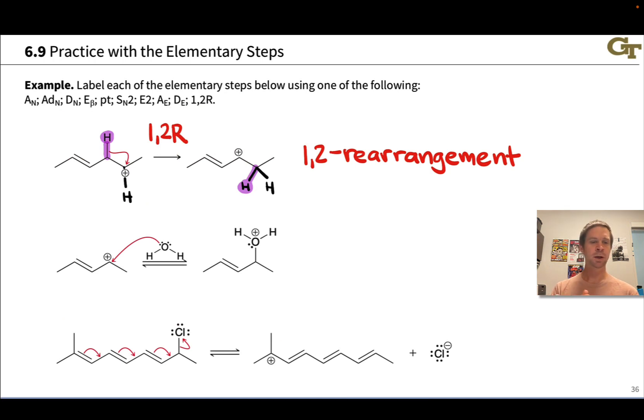In the second example, we have a carbocation. This actually looks very similar to the carbocation above - a resonance stabilized allylic carbocation. There's a curved arrow starting from this oxygen, the lone pair at that oxygen specifically, headed toward the cationic carbon. The result is the formation of a new oxygen-carbon bond between the nucleophilic oxygen and the electrophilic cationic carbon. What's happening here is the attack of a nucleophile on a six-electron cationic center. We've called this A sub N, or nucleophilic attack.